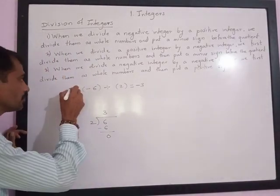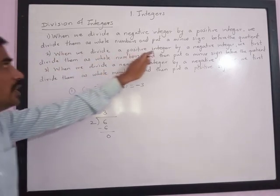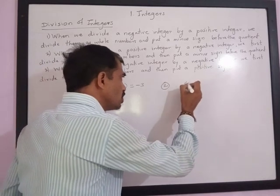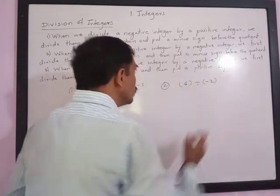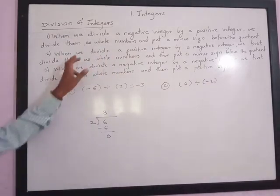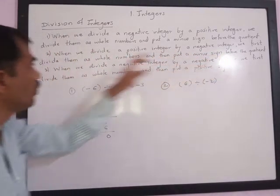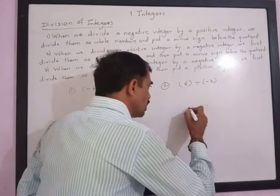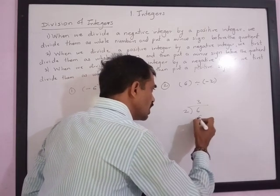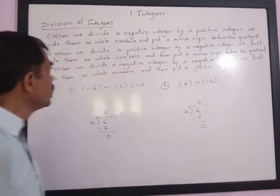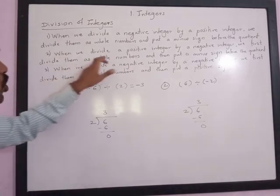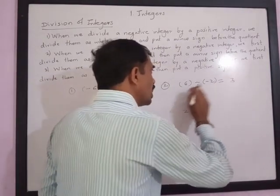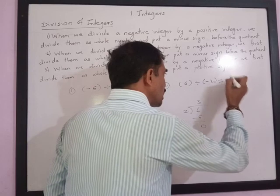The second rule is when we divide a positive integer by a negative integer. For example, positive 6 divided by negative 2. We first divide them as whole numbers: 6 divided by 2 gives quotient 3 and remainder 0. Then we put a minus sign before the quotient, giving negative 3.